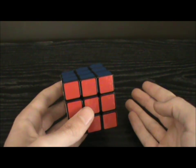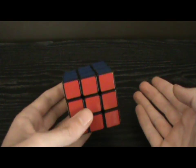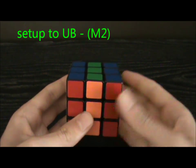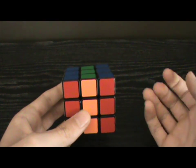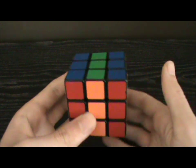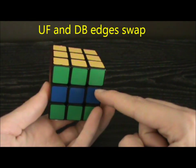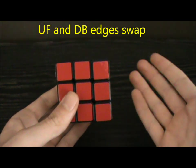With the M2 method, DF is the buffer, and the idea is to set up the target to UB, then do M2, then undo the setup move. So after every piece you solve, you offset the M slice by an M2. This means UF and DB will continuously be swapped, then swapped back after each target you solve.